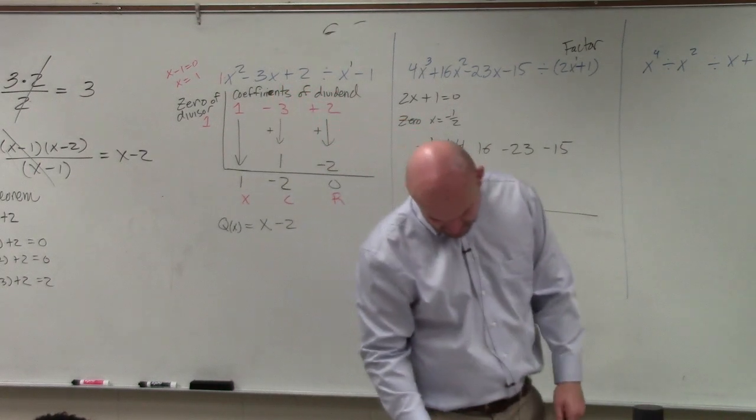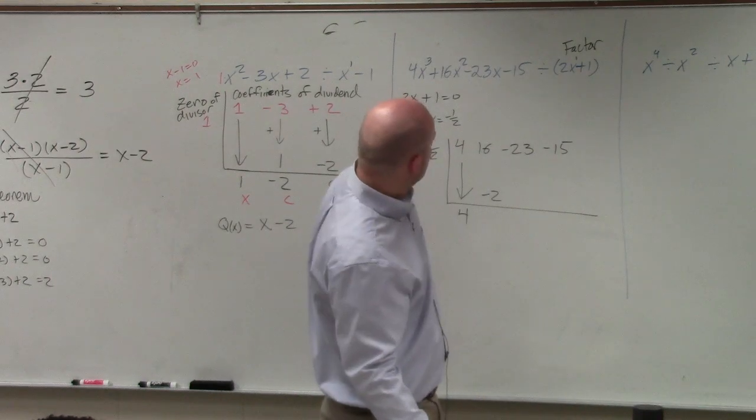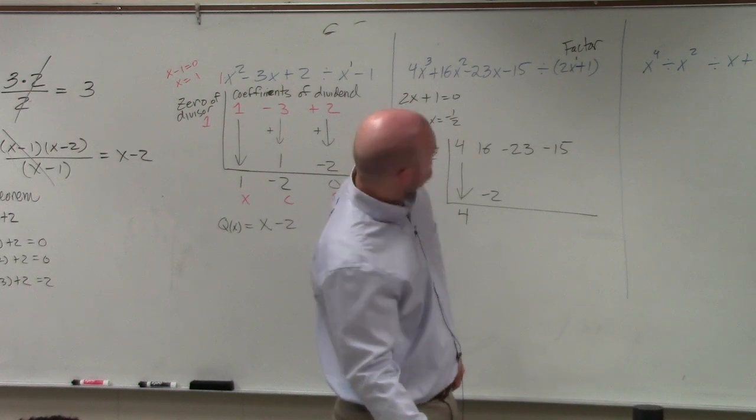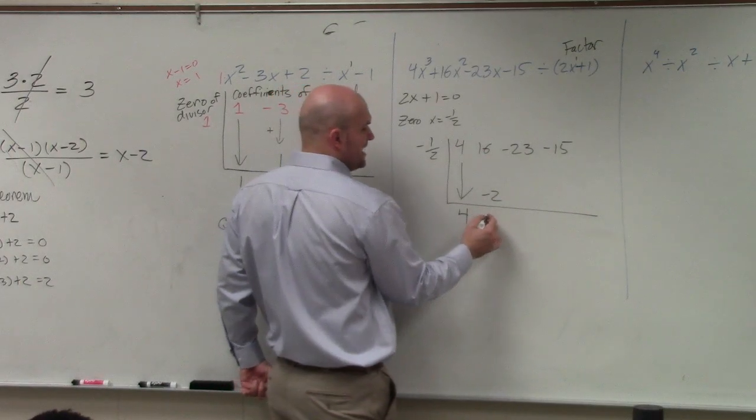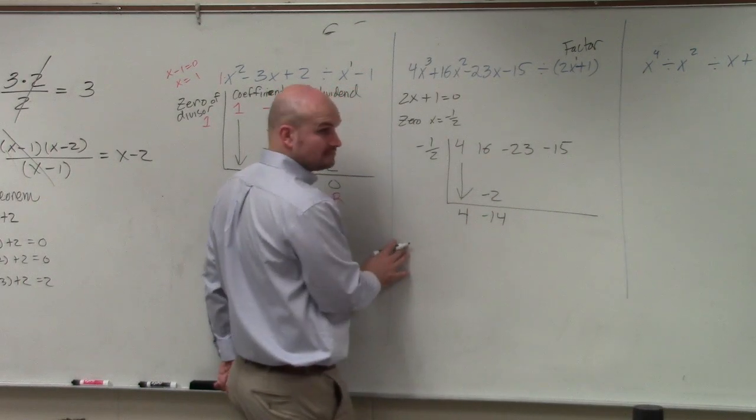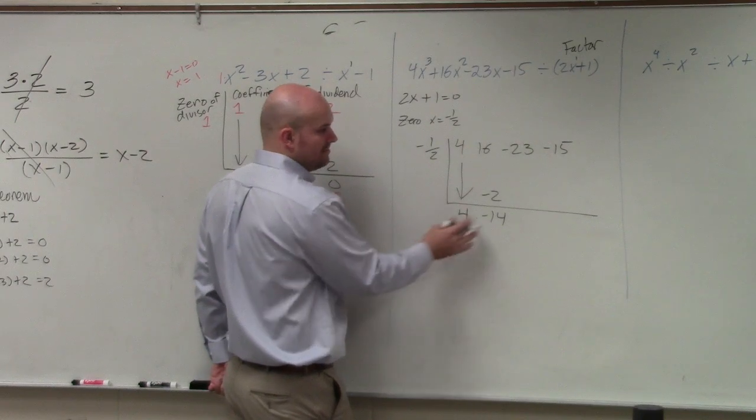Did I write this on the problem? 4x squared is 16x, minus 23x. OK, 16 plus negative 2 is going to be 14. Positive 14.